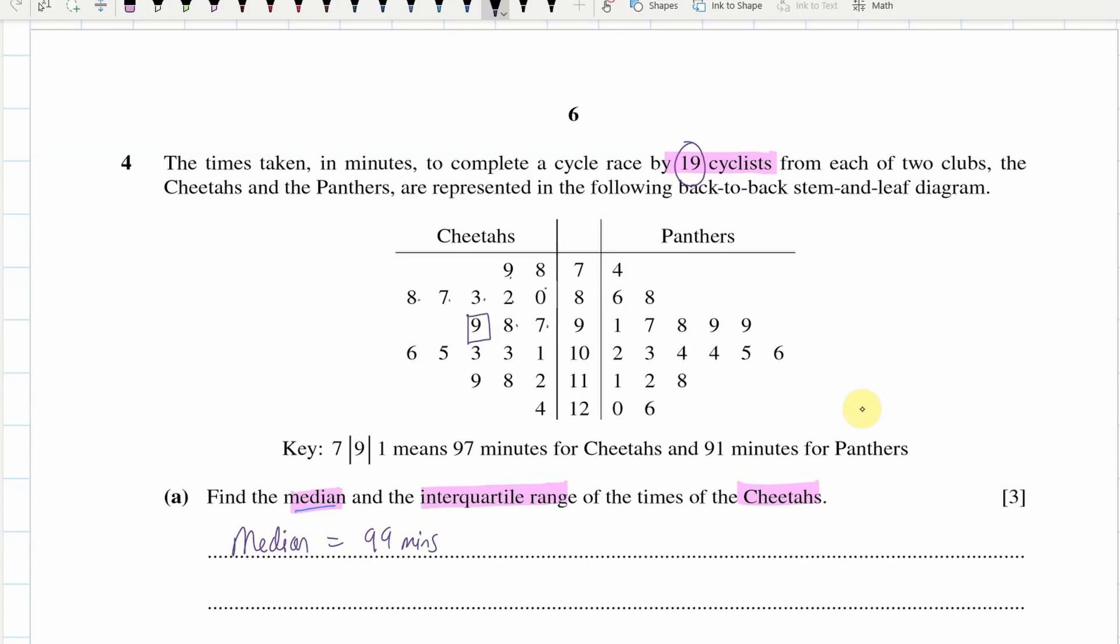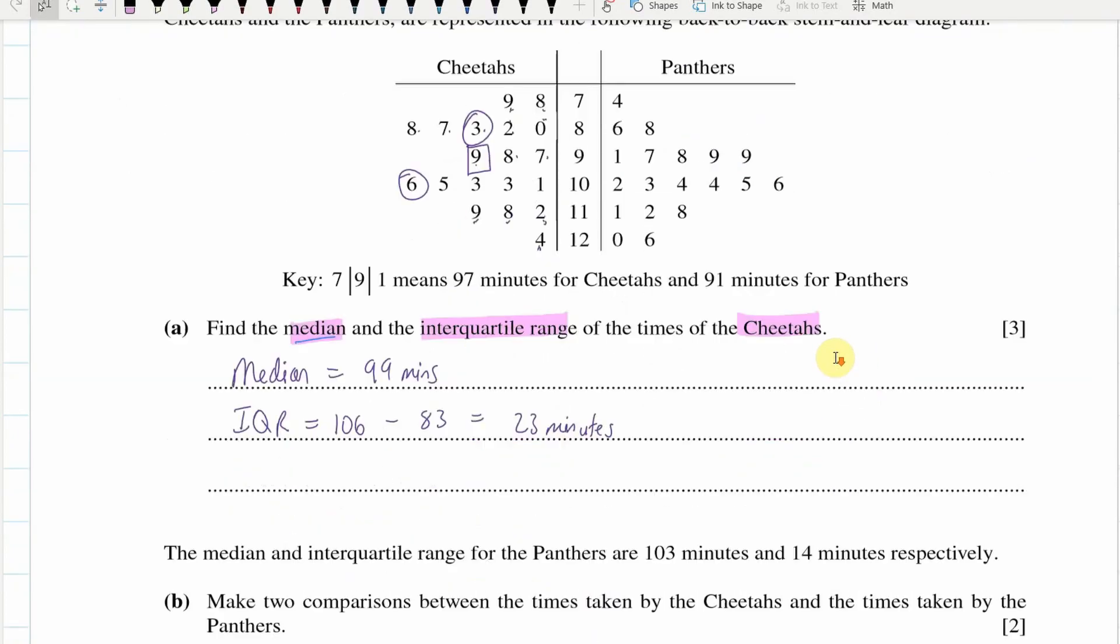Then, what I do for the lower quartile, I know that now I've got 9 underneath that, so I'm looking for my 5th value, because halfway between is the 5th value. Because 9 divided by 2 is 4.5, so we're looking for 5th. 1, 2, 3, 4, 5, lower quartile. And then I go either 5 up from the median or 5 down from the top. 1, 2, 3, 4, and this one here. So IQR equals 106 take away 83 equals 23 minutes. Easy, easy, easy.